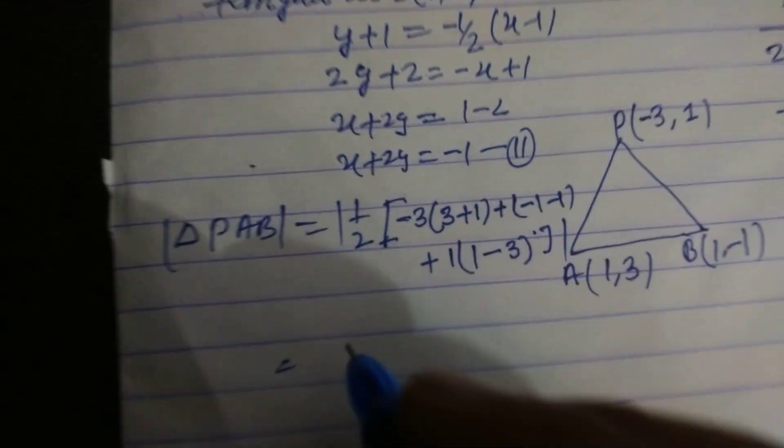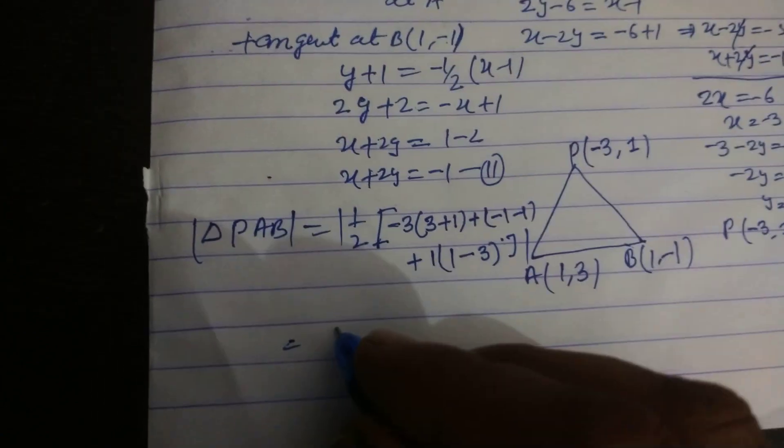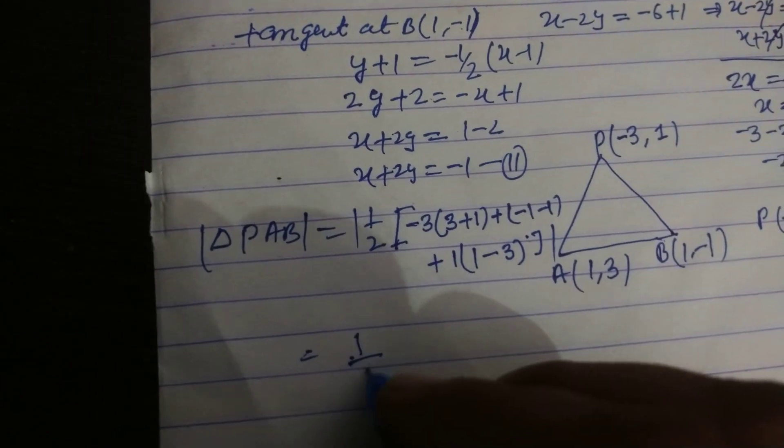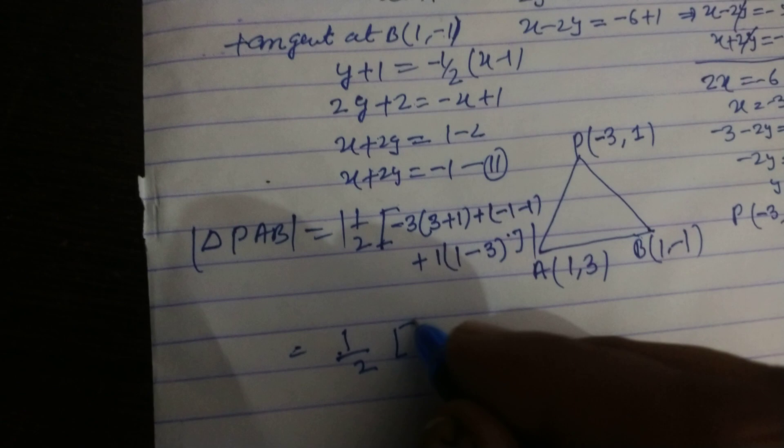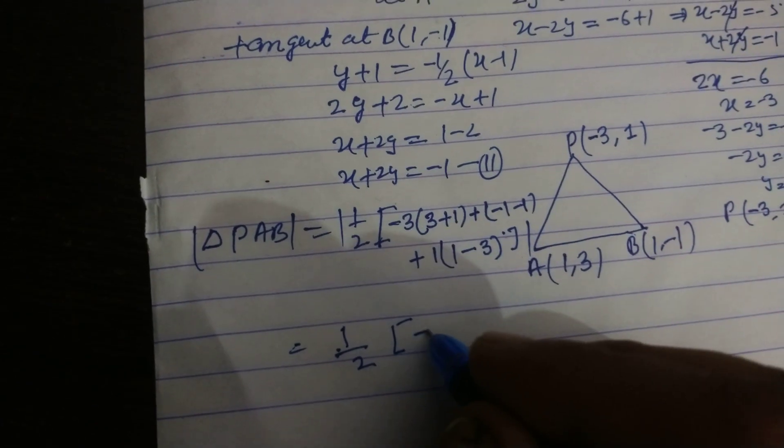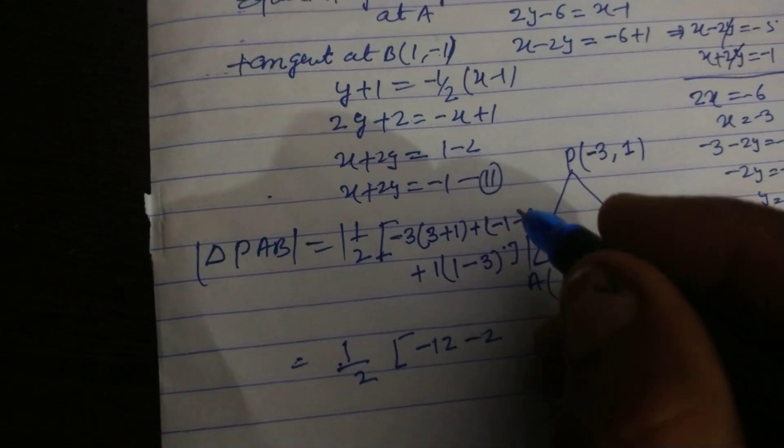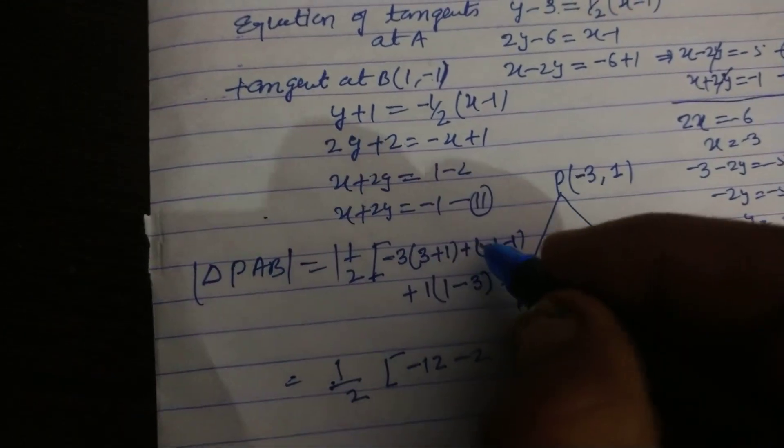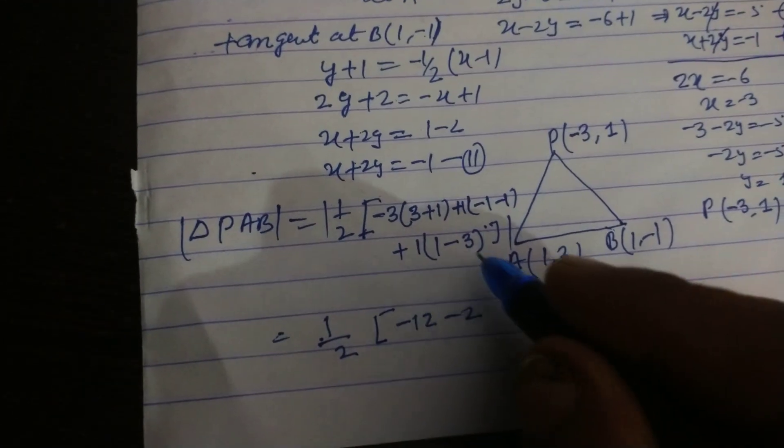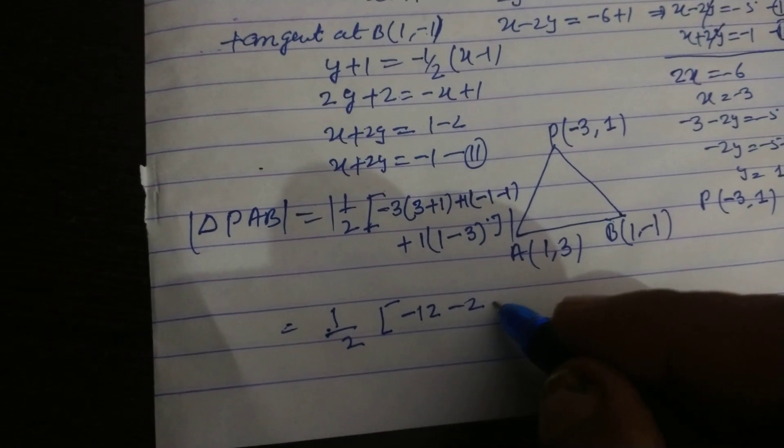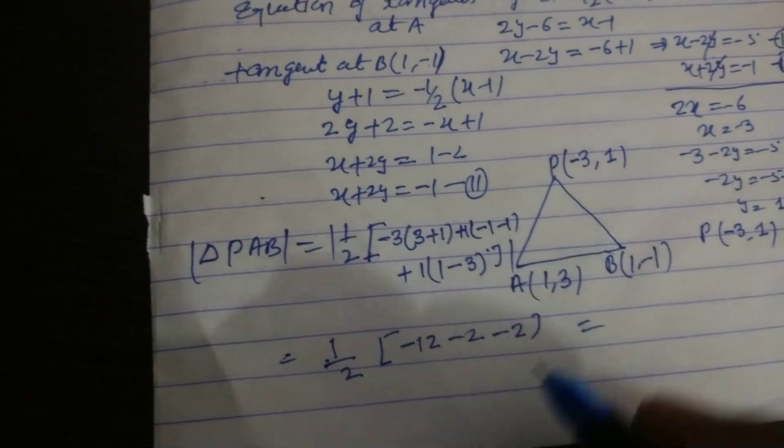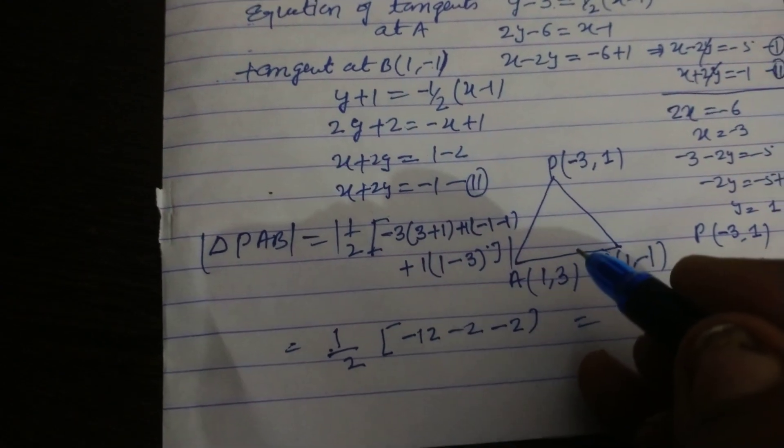We take modulus, so 1/2 of, this is -3(3 - (-1)) + 1((-1) - 1) + 1(1 - 3). This is -12 + (-2) + (-2), so -16.